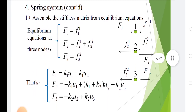For the spring system, assemble the stiffness matrix from the equilibrium equations at three nodes. f1 equals k1·u1 minus k1·u2. f2 equals minus k1·u1 plus (k1 plus k2)·u2 minus k2·u3. f3 equals minus k2·u2 plus k2·u3.